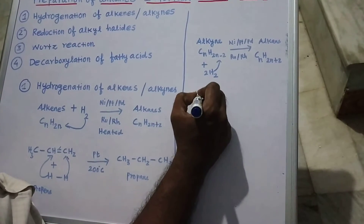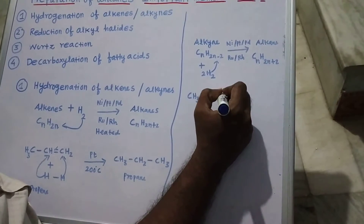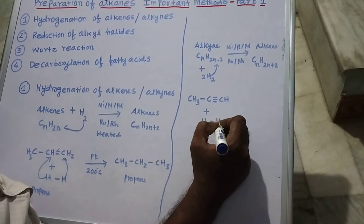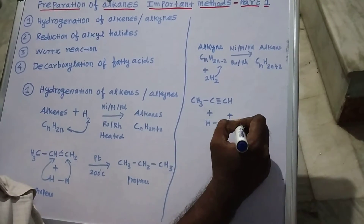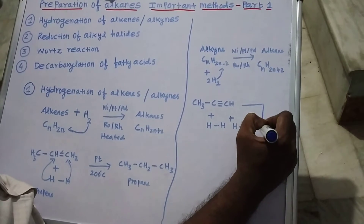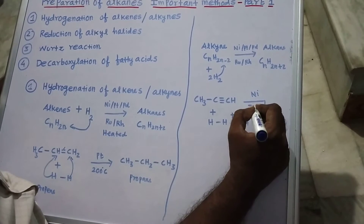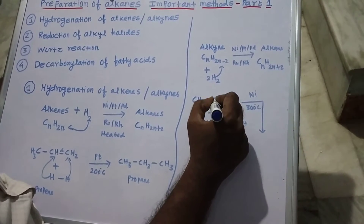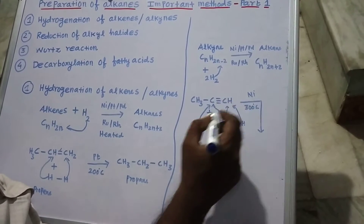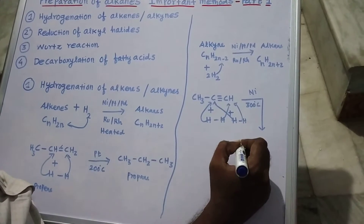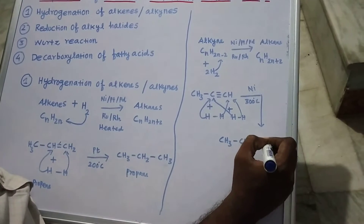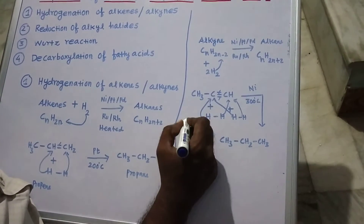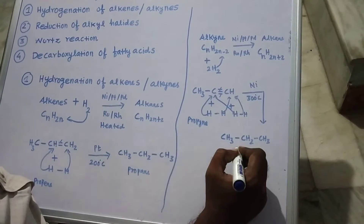For example, when CH3-C≡CH is heated with two molecules of hydrogen in the presence of nickel at 300°C, the two hydrogens add across the triple bond. We get CH3-CH2-CH2-CH3. Both pi bonds are broken, and we get the corresponding alkane. This is propyne converted to propane.